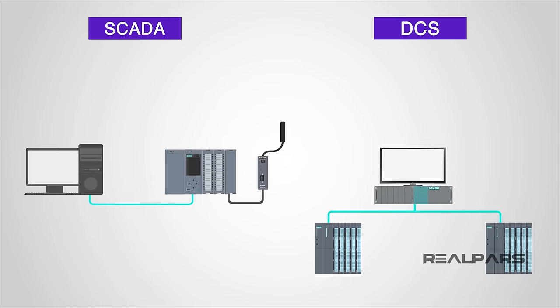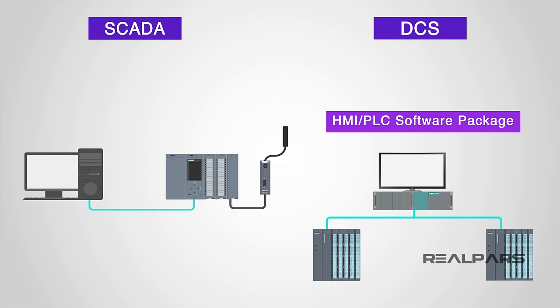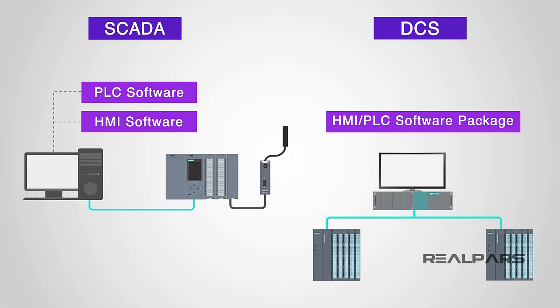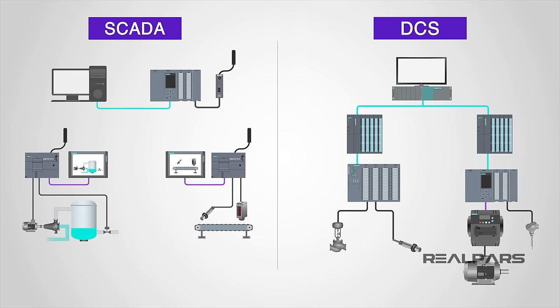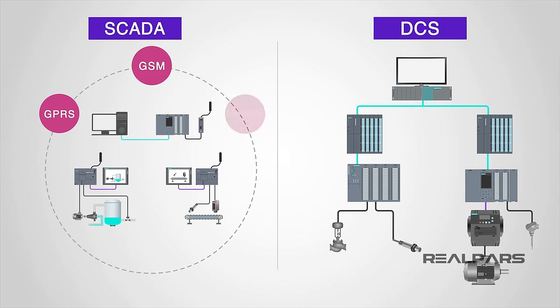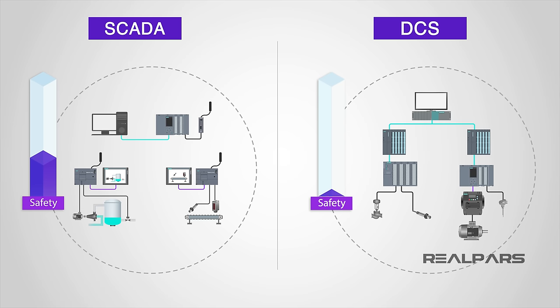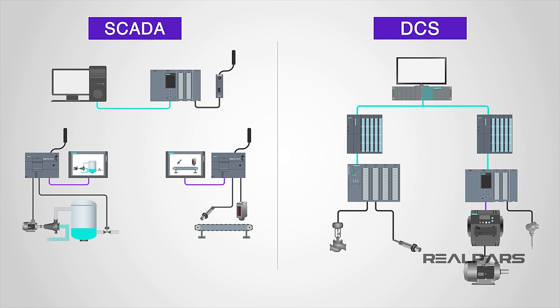To sum things up, in today's market there are not massive differences between the systems. DCS systems have integrated operator interface software with tag databases, while SCADA requires you to purchase additional software and build or import your tags. If you have a very time-sensitive process, SCADA systems may have a slight advantage as processing time is faster. Need an open communication architecture? Advantage SCADA. Concerned about safety? Advantage DCS. There are a lot of similarities between the two systems, and hopefully this video has shed some light on both the similarities and differences.